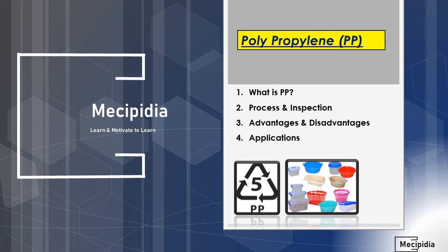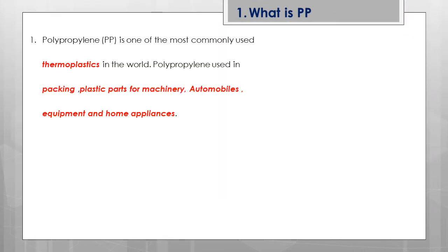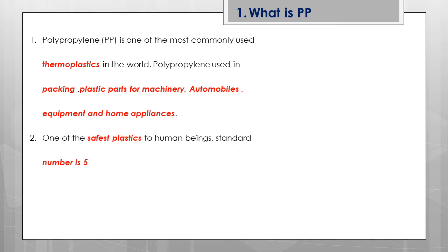Polypropylene is one of the most commonly used thermoplastics in the world, with wide applications. It is used in packaging, machinery parts, automobile parts, and home appliances. It is one of the safest plastics for human beings, and its standard identification number is five.